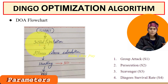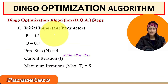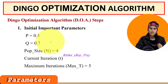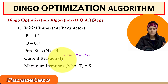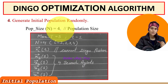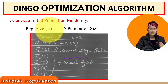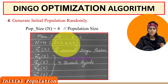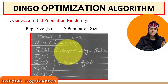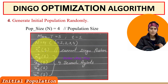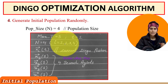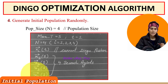Before initialization, we set important parameters p and q, which simulate hunting behavior. For simplicity, suppose population size N = 4, current iteration t = 1, and maximum iterations max_t = 5. Each dingo's current position is represented as an xi vector. We have four search agents x1, x2, x3, and x4, all in the first iteration t = 1.